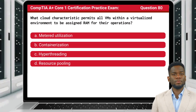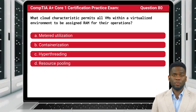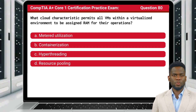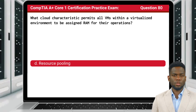Question 80: What cloud characteristic permits all VMs within a virtualized environment to be assigned RAM for their operations? The answer is D: Resource pooling.